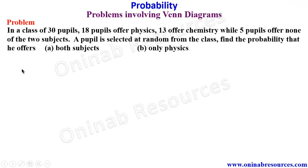So we start with the problem. In a class of 30 pupils, 18 pupils offer physics, 13 offer chemistry, while 5 pupils offer none of the two subjects. A pupil is selected at random from the class. Find the probability that he offers A, both subjects, B, only physics.